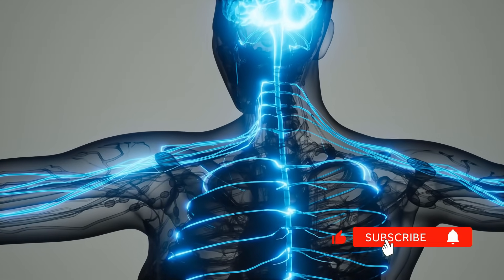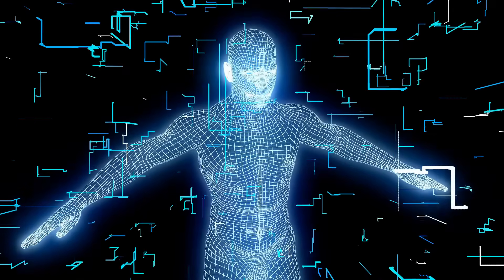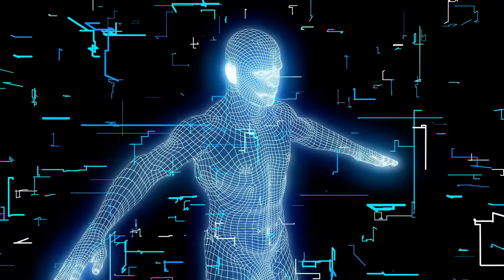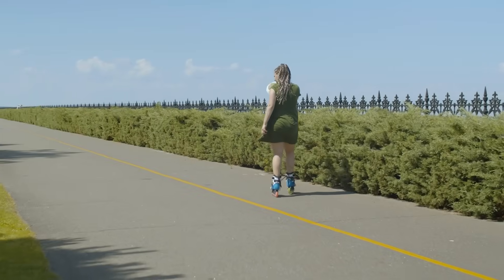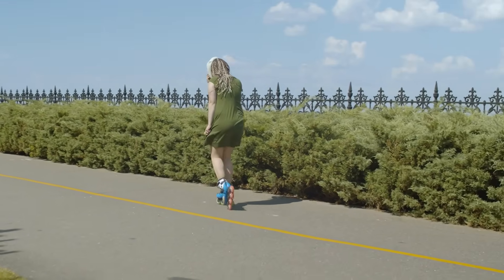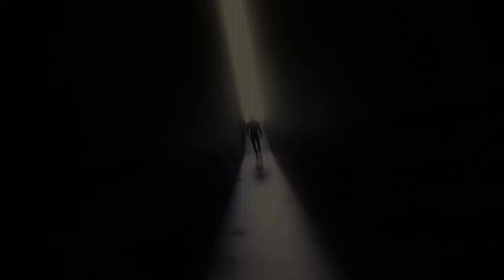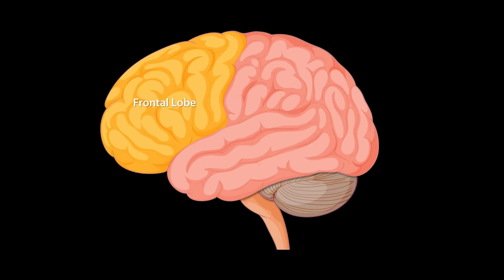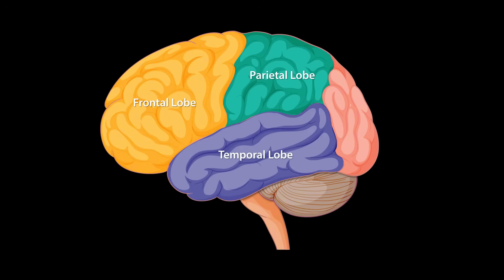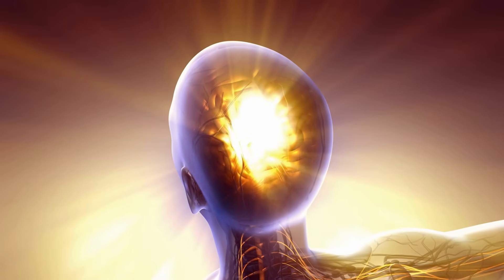First, your proprioceptive system wakes up. These are the sensors throughout your body that track where you are in space. Walking backwards forces them to work overtime because you can't rely on visual cues. You're moving into the unknown with every step. This sends your prefrontal cortex, your command center for attention and decision-making, into active monitoring mode. No more autopilot. Full conscious engagement.